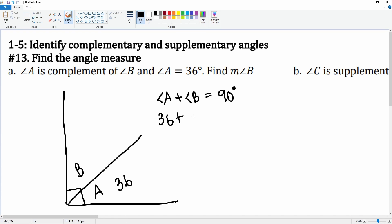Angle A is 36 degrees. We don't know what angle B is. Now we can subtract 36 from both sides, leaving you here with angle B is equal to 90 subtract 36.